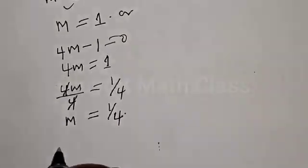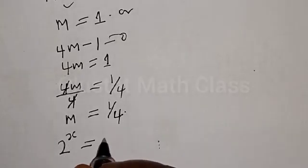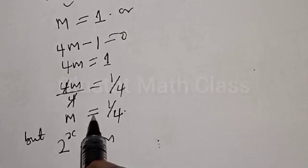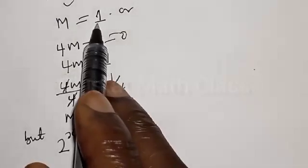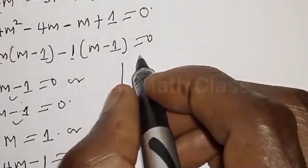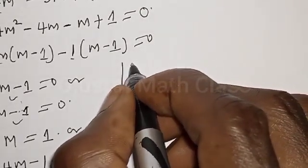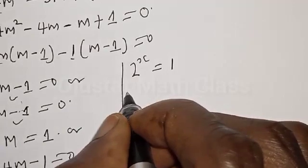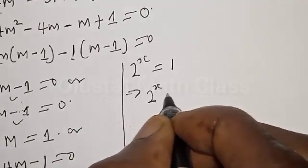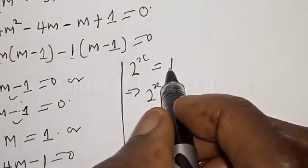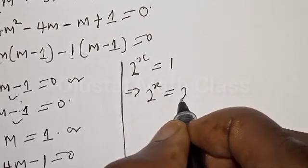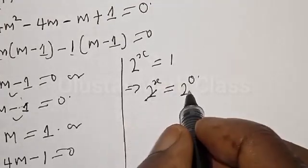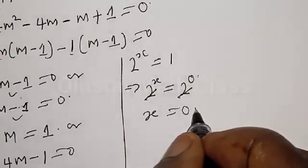Recall that 2 raised to power s equals m. For the first case, 2 raised to power s equals 1. Since any base raised to power 0 is 1, we have 2 raised to power s equals 2 raised to power 0. Since the bases are the same, s is equal to 0.